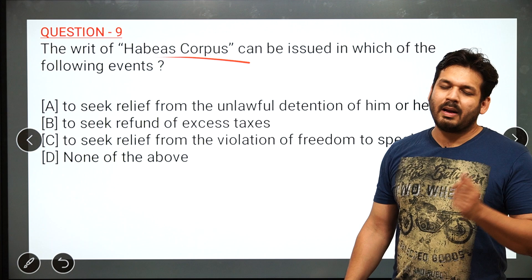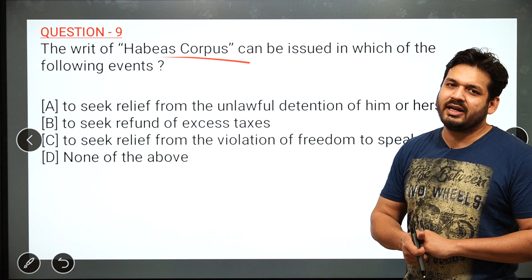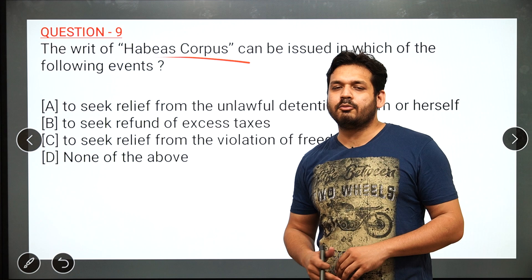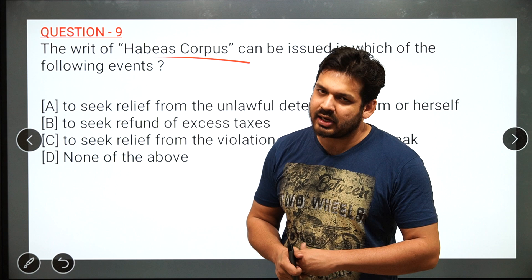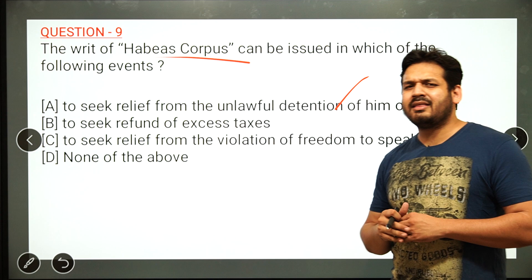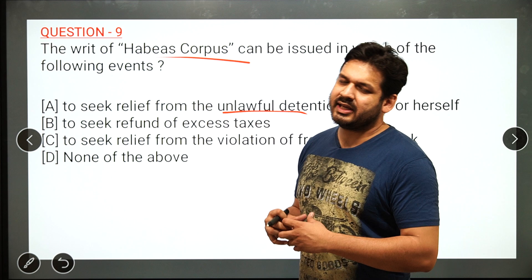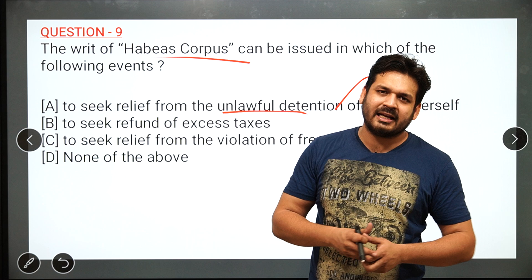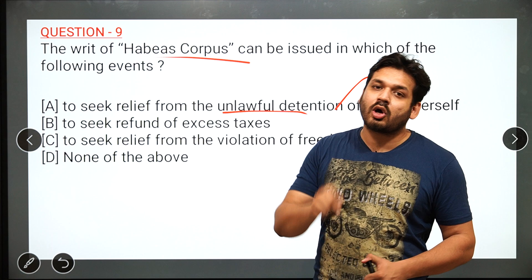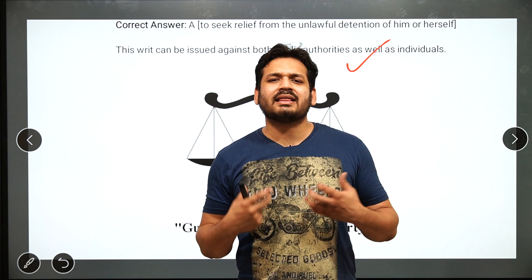Question 9 is a polity question about writs. One writ mentioned is Habeas Corpus. There are five types of writs — one is mentioned here, please name the other four in the comment box. These writs can be issued by the Supreme Court and High Court. Please also comment which article empowers the Supreme Court to issue writs and which article empowers the High Court.